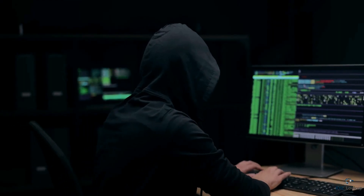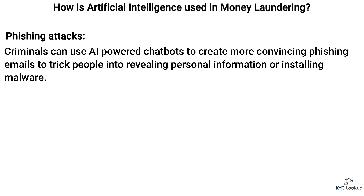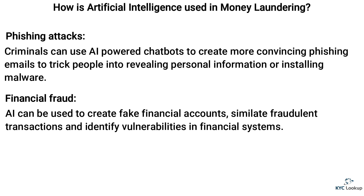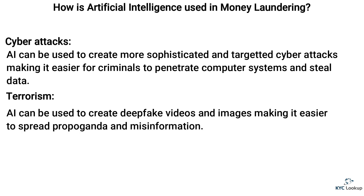Here are some ways criminals could potentially use AI. Phishing attacks: criminals can use AI-powered chatbots to create more convincing phishing emails to trick people into revealing personal information or installing malware. Financial fraud: AI can be used to create fake financial accounts, simulate fraudulent transactions, and identify vulnerabilities in financial systems. Cyber attacks: AI can be used to create more sophisticated and targeted cyber attacks, making it easier for criminals to penetrate computer systems and steal data. And terrorism: AI can be used to create deepfake videos and images, making it easier to spread propaganda and misinformation.